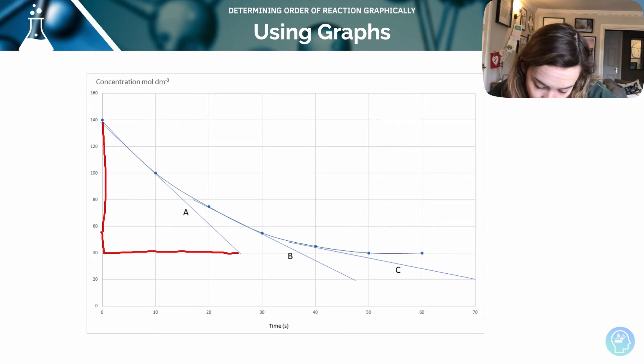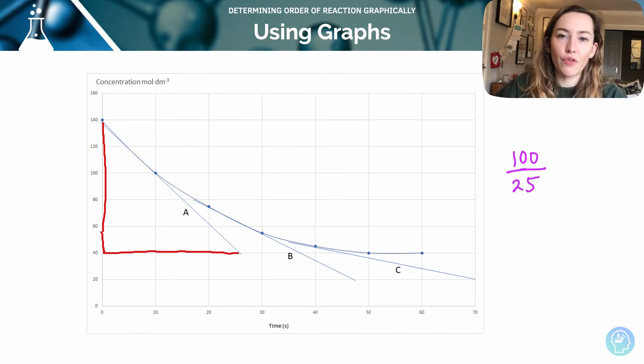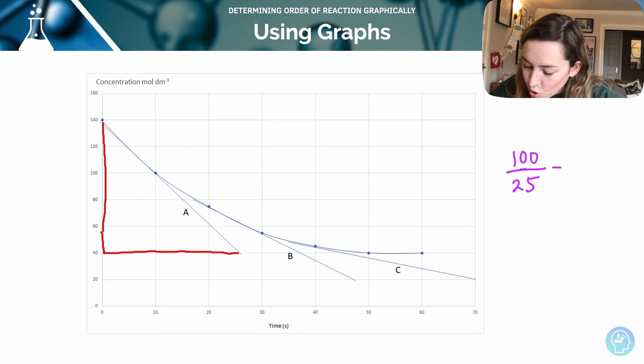So let's have a look at my rise. It's gone from 40 to 140 in terms of the concentration. So my rise is 100 moles per decimeter cubed over my run. And that has happened over 10, 20, 25. But this is a tangent, of course. So 100 divided by 25 tells me that my rate is 4 moles per decimeter cubed per second.